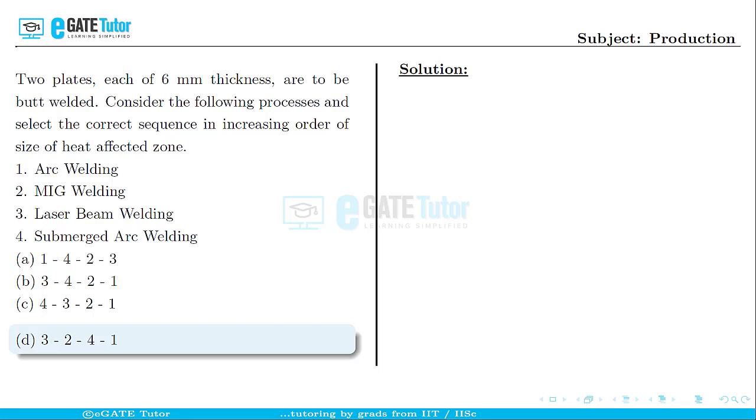Arc welding, MIG welding, laser beam welding, and submerged arc welding. These are the four processes given to us and we need to find out the increasing order of heat affected zones for these four processes.